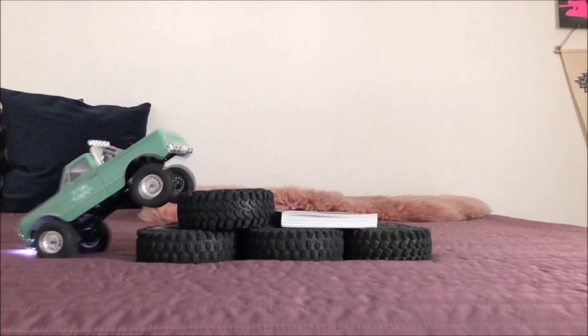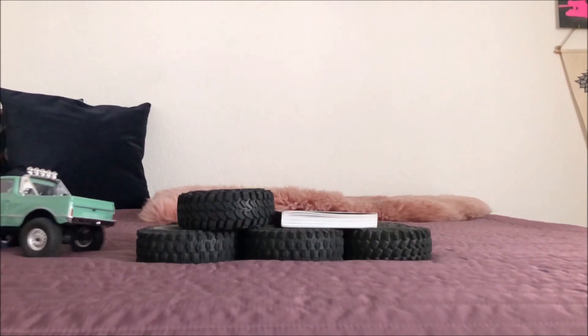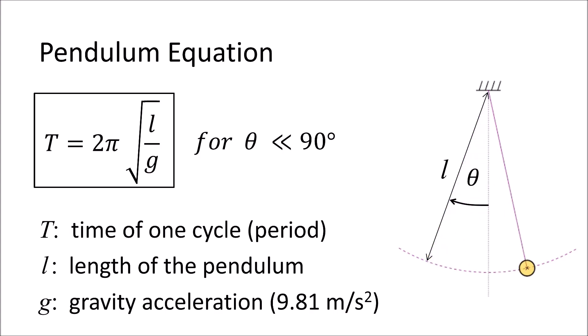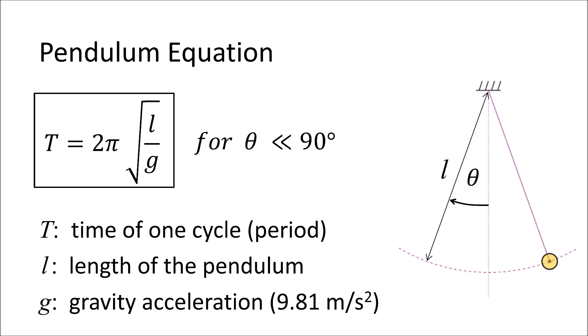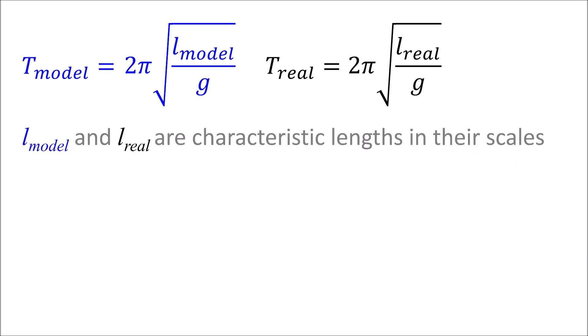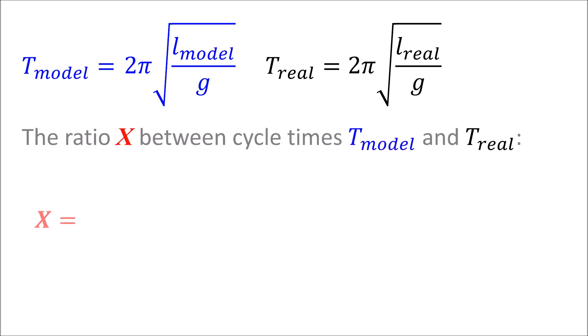The oscillation can be expressed by a simple pendulum equation with t as the time of one cycle, also called the period, l the length of the pendulum, and g the gravity acceleration. This equation is valid for small oscillation angles. The pendulum equation can be used to express the cycle times in the model and the original using their characteristic lengths in the dimensions of the model and the original respectively.